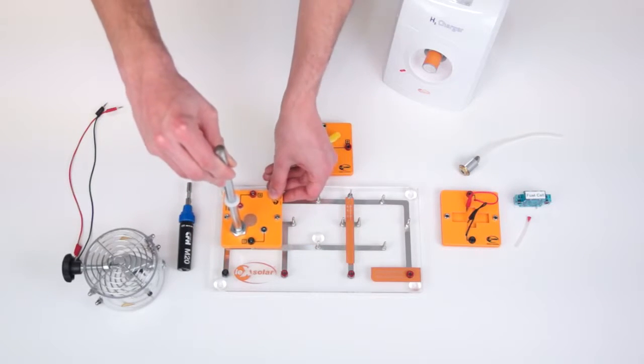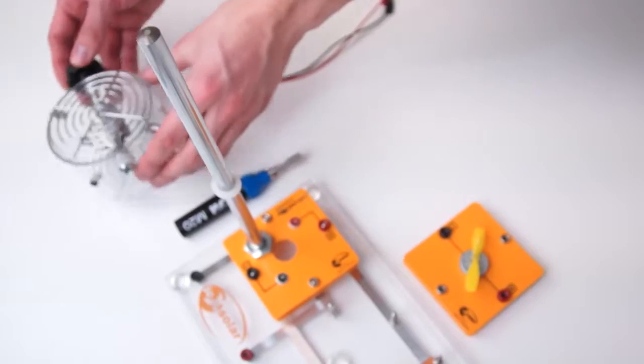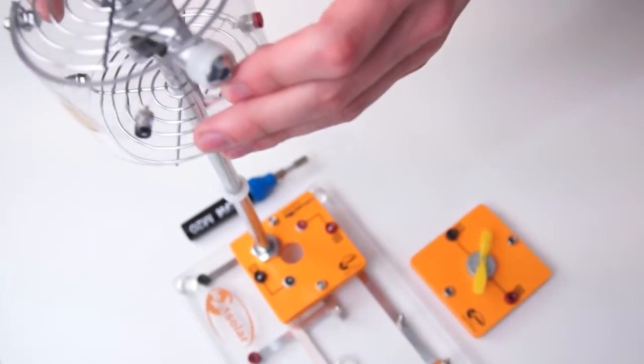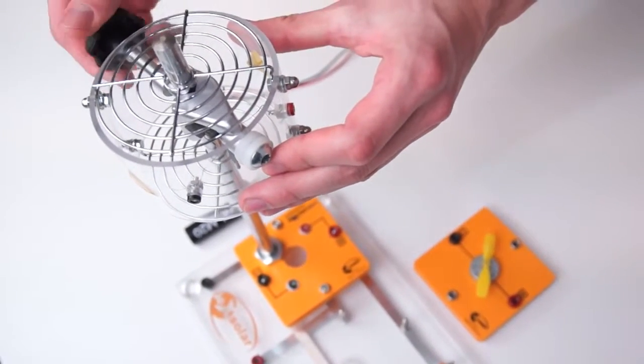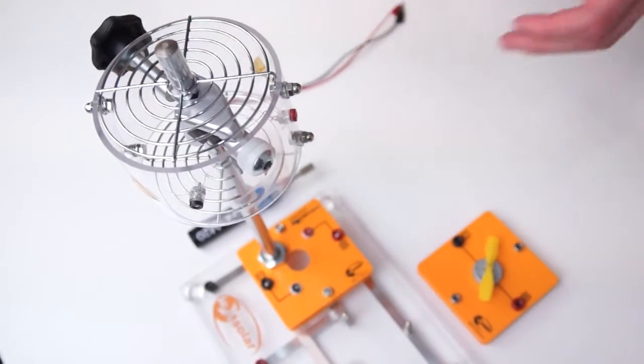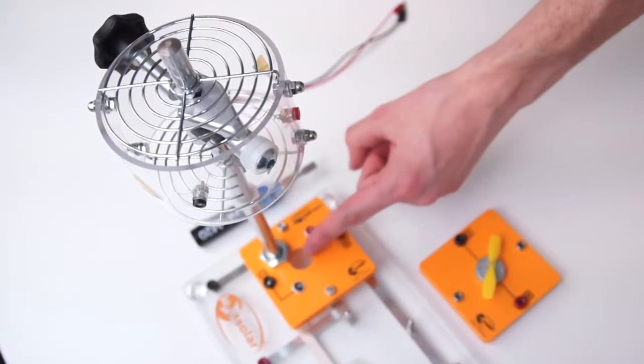Then we fix the SOFC fuel cell with the plexiglass protection to the stand. It must be ensured here that the opening of the protection is over the hole of the stand module.